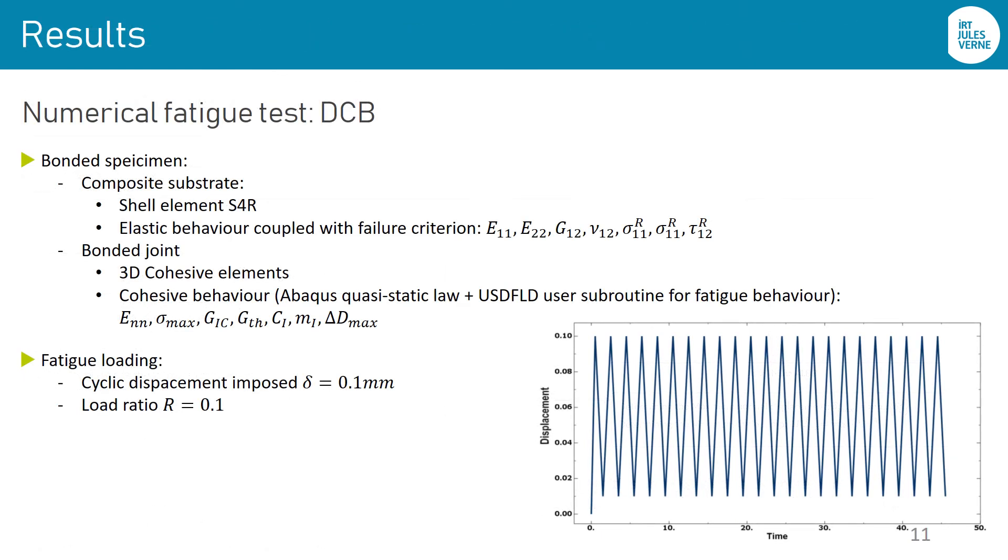In order to assess the model consistency, the DCB test is performed in conformity with the ISO/ASTM standard. The composite parts are modeled using shell elements while the bonding joint is represented by 3D cohesive elements. Its behavior is governed by the fatigue cohesive model. The input model parameters are given as follows. Concerning the boundary condition, the loading is represented by the curve given at the right. The Fourier series-based cyclic loading available in Abaqus is used. Thus, a cyclic displacement is imposed with a constant load ratio of 0.1.